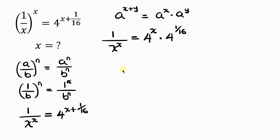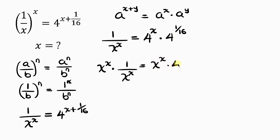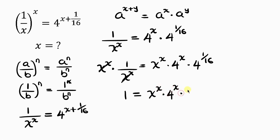Our next step is to make the left hand side unity — that is, equal to 1. We do this by multiplying both sides by x^x. On the left, x^x times 1 over x^x cancels, leaving 1. On the right we have x^x times 4^x times 4^1 all over 16.